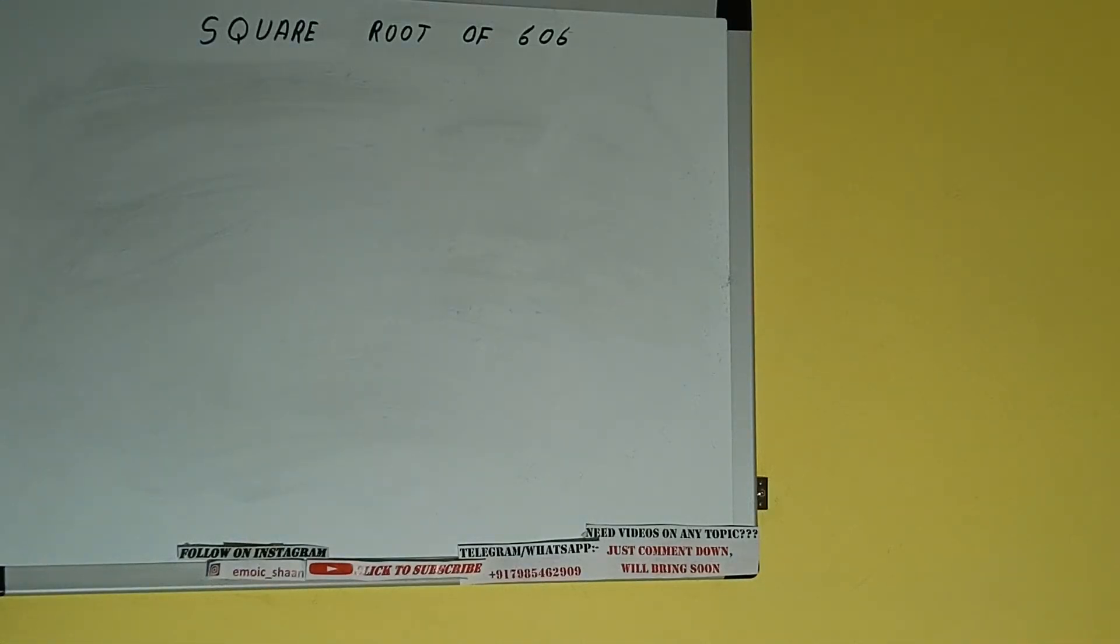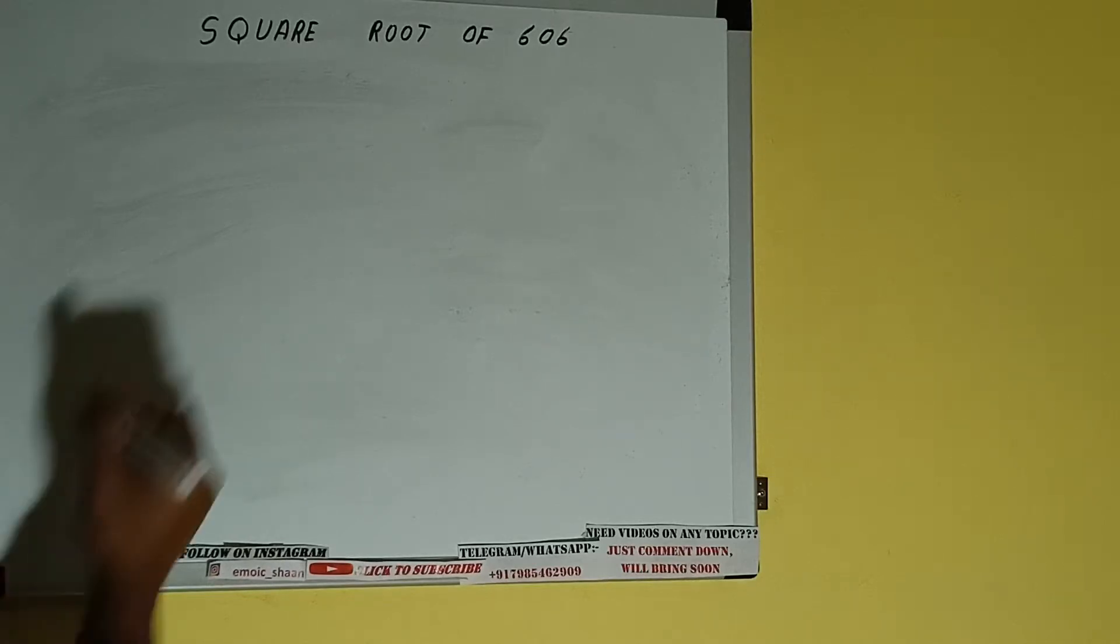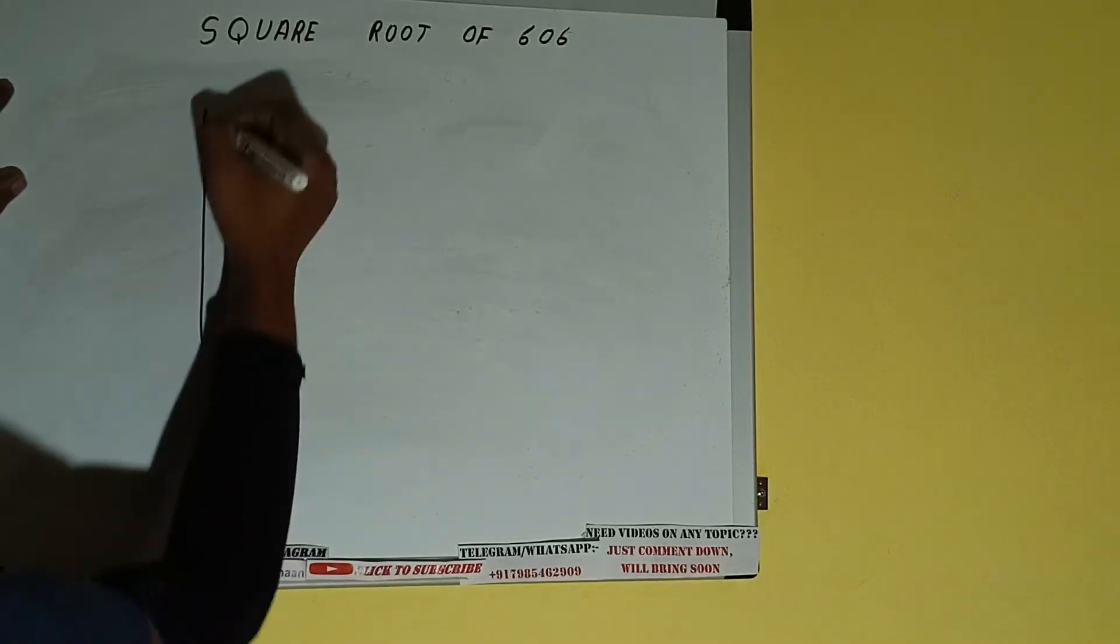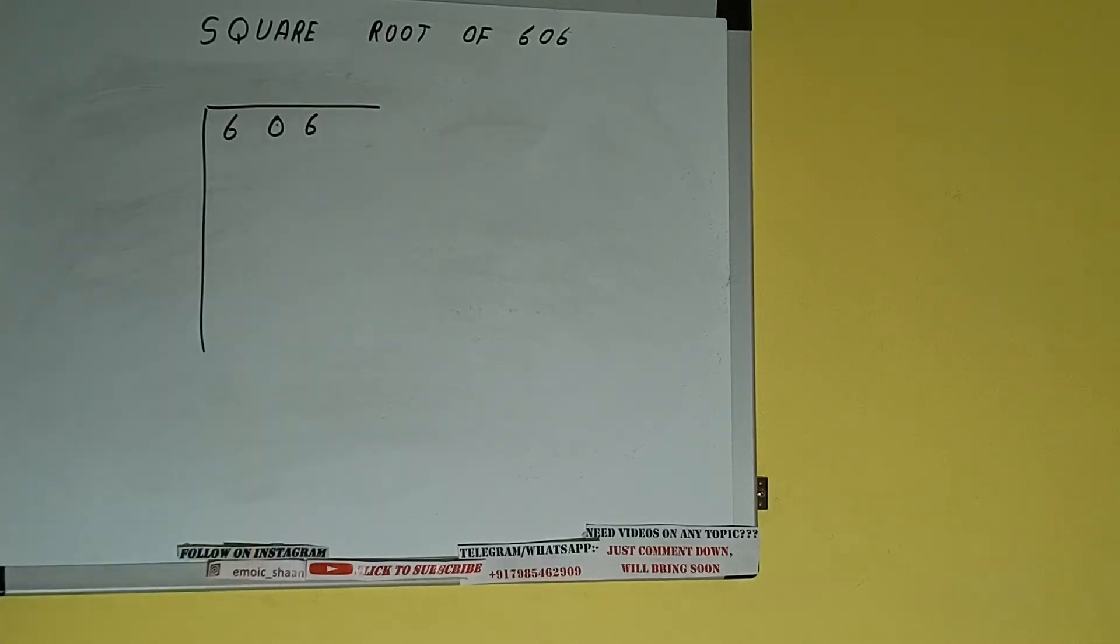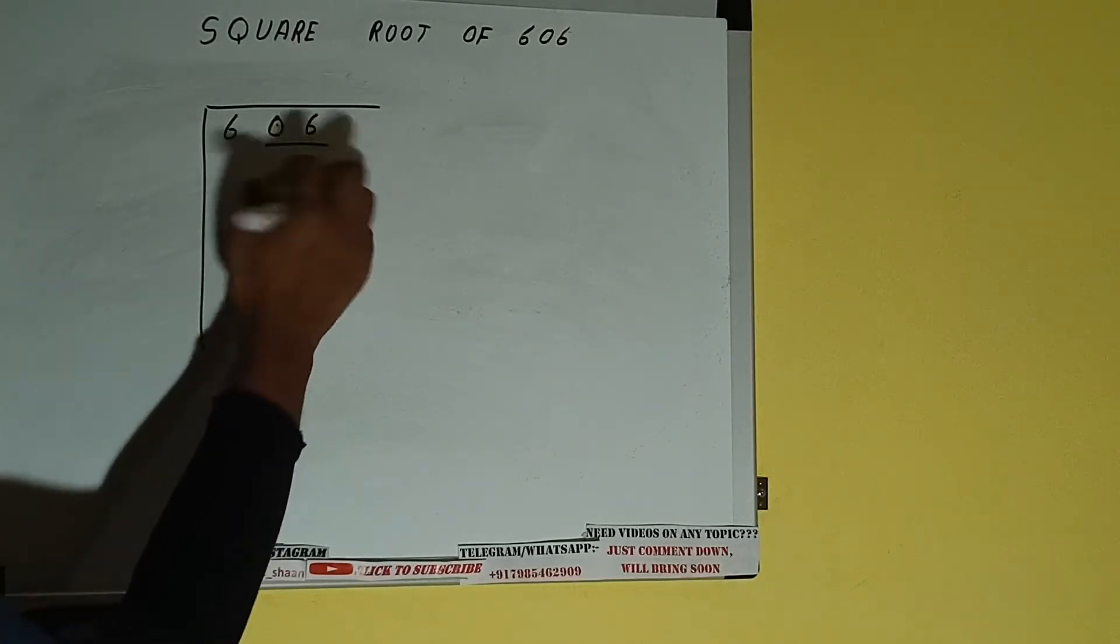Hello friends, and in this video I will be helping you with the square root of the number 606. Let's start. First of all, we need to write the number like this. The next thing we need to do is form pairs from the right hand side, so one pair will be this and this will be left out.